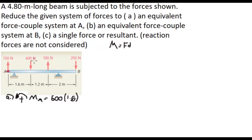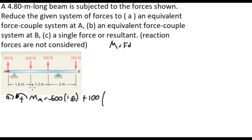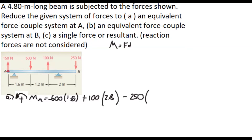So 600 times 1.6 — since 600 N is pointed downwards, it would cause the beam to rotate clockwise, which is against our assumption, so that is negative. The next force is 100 N pointing upward, which would cause counterclockwise rotation, so it is positive: 100 times the perpendicular distance from A, which is 1.6 plus 1.2 equals 2.8. The last force points downward causing clockwise rotation, so it is negative, times the total beam distance of 4.8.